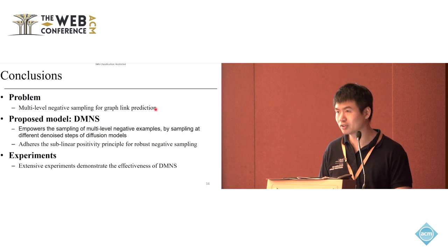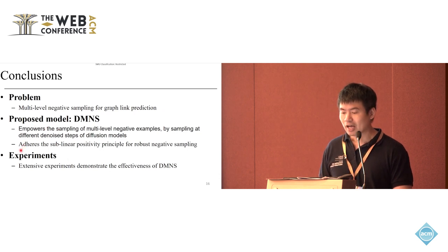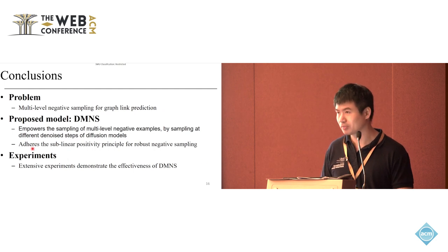In conclusion, we study a problem called multi-level negative sampling for graph link prediction. The motivation is to generate negative samples of different levels of difficulty. We achieve this by considering a diffusion model. Compared to other generative models like GANs, diffusion models allow you to easily control which time step you want, and different time steps would give you samples of different hardness.